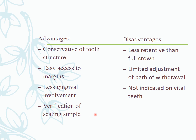Advantages of partial veneer crowns include conservation of tooth structure, easy access to the margin, less gingival involvement, and simpler verification of seating compared to a full crown. Disadvantages include being less retentive than a full crown, limited adjustment of the path of withdrawal, and being contraindicated in vital teeth.